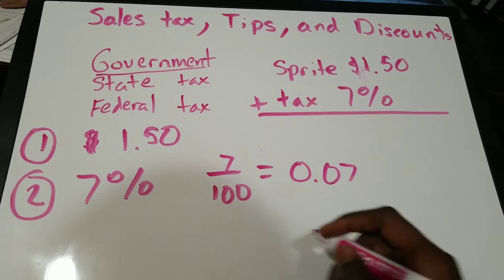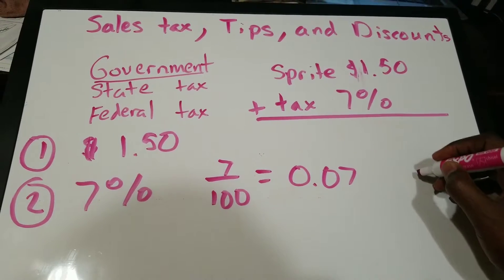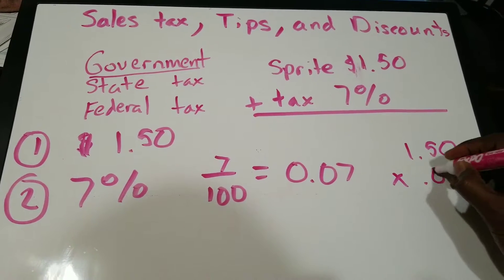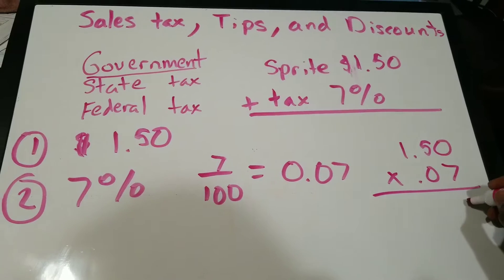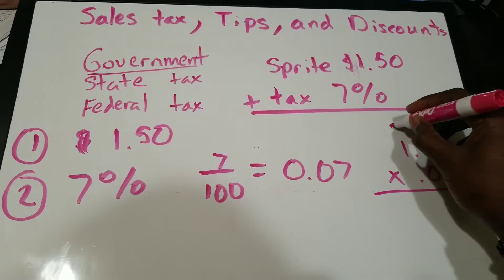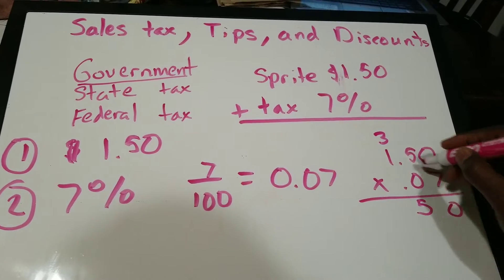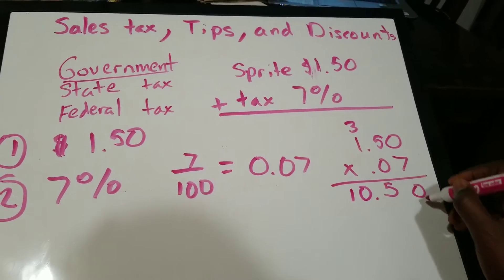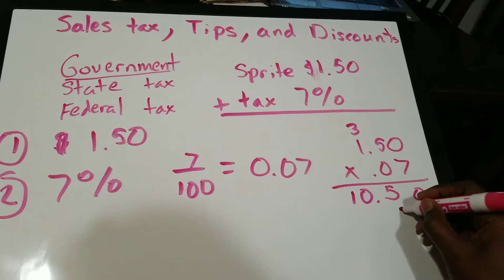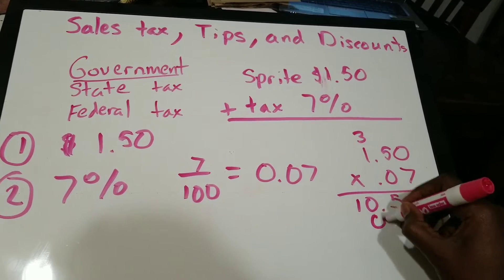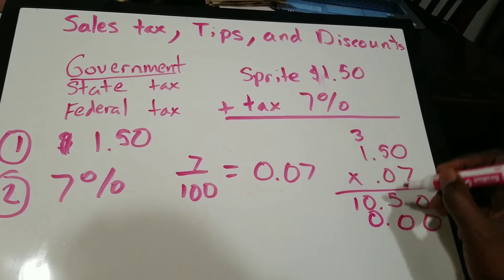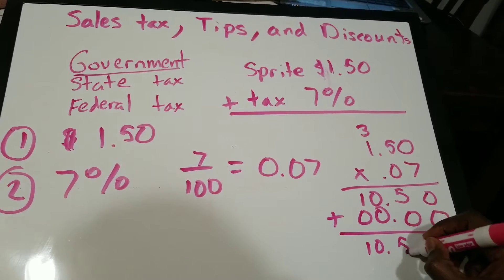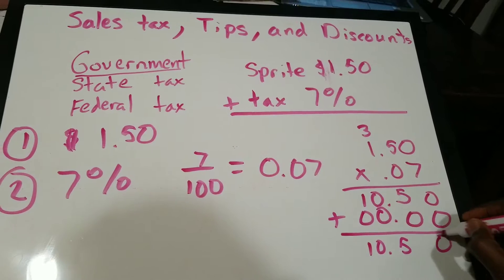And you're going to multiply 1.50 times 0.07. So 7 times 5 is 35, 7 times 1 plus 3 is 10. Bring your decimal down. Then add your placeholder row: 0 times 0 is 0, 0 times 5 is 0, 0 times 1 is 0. Now we add that up — boom, we get 0.1050.